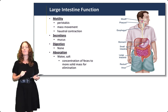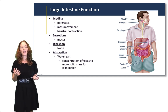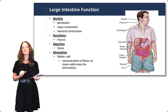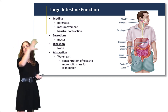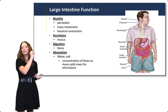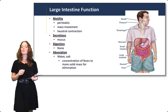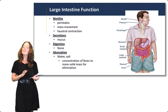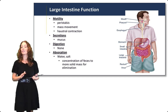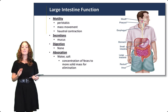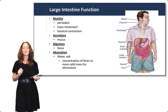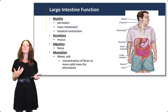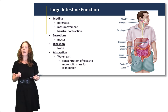The major functions of the large intestine: it has peristalsis and a specialized movement called mass movement. Mass movements are large movements that move undigested food waste through the large intestine. The large intestine also secretes a lot of mucus to help move that waste through. By this time, all important digestion and absorption has occurred in the small intestine, so there is no digestion in the large intestine. There is a little absorption — pretty much just water and salt — which helps to concentrate the feces into a more solid mass for elimination.